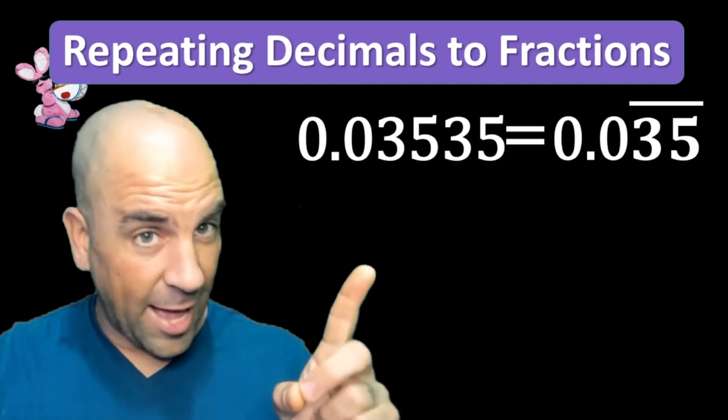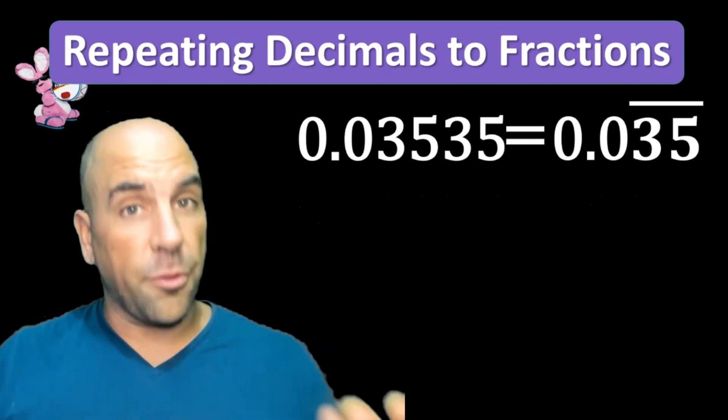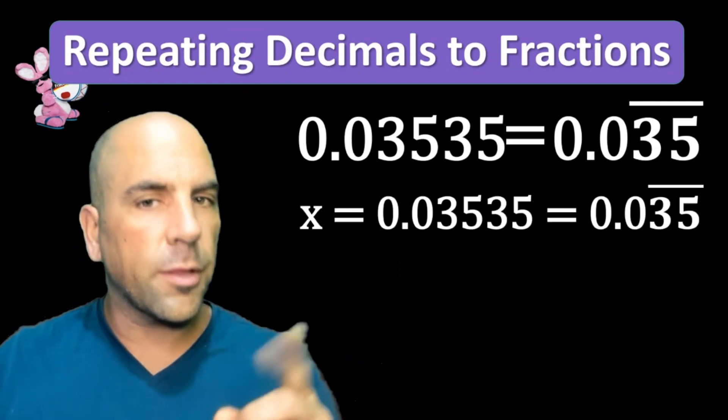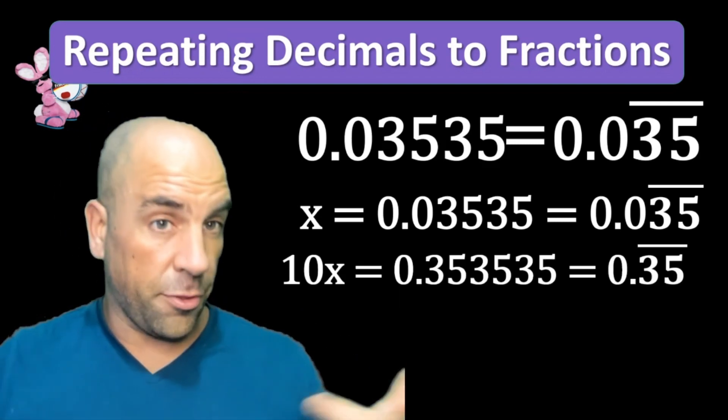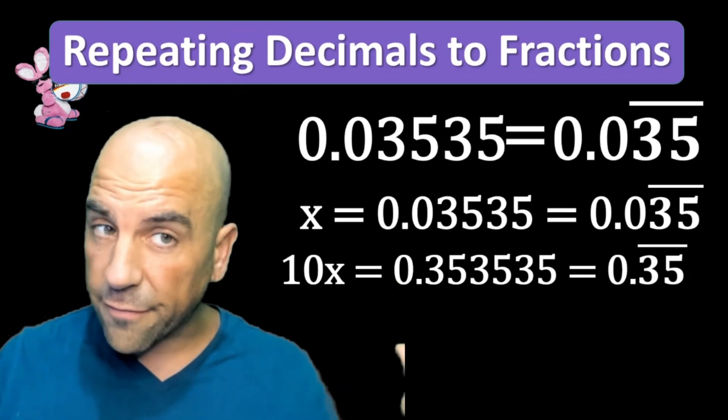Last one—it's a little trickier. 0.035 repeating where the 35 is repeating. If we set that equal to x, it's going to be hard to work with. Watch what happens when we multiply by 10: 10x equals 0.35 repeating. Now look, everything repeating is all that's left on the other side of the decimal—we've moved the zero over.